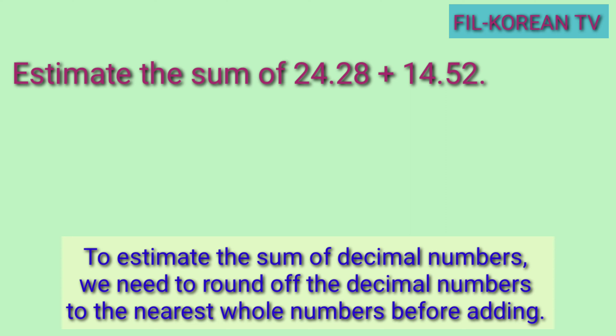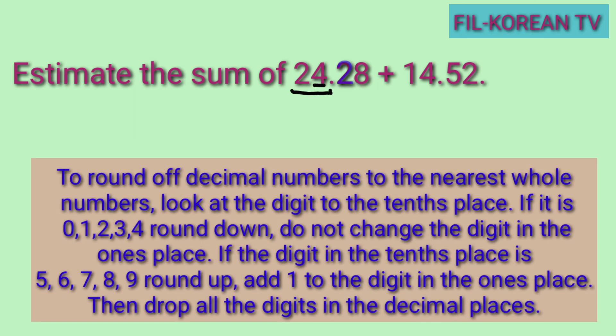I-round off natin itong addends. Unahin natin itong 24 and 28 hundredths. Ang whole number ay 24, at ang nasa 1's place ay 4. Ngayon, titignan natin ang number sa kanyang kanan. Yung susunod na number sa 4 sa kanan niya ay 2 — ito yung nasa 10's place. Sa pag-round off ng number, kapag yung susunod na number sa rounding place ay mababa sa 5 — ibig sabihin 0, 1, 2, 3, 4 — yung susunod sa number na i-round off natin, ang gagawin natin ay round down.